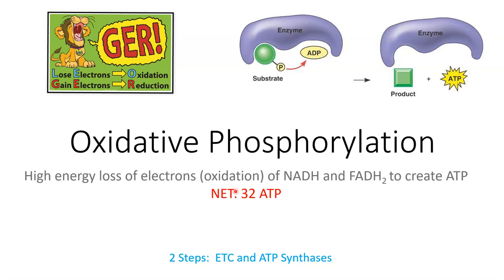The oxidative phosphorylation step is comprised of two different components. One is called ETC, which stands for electron transport chain, and the final one is ATP synthase.